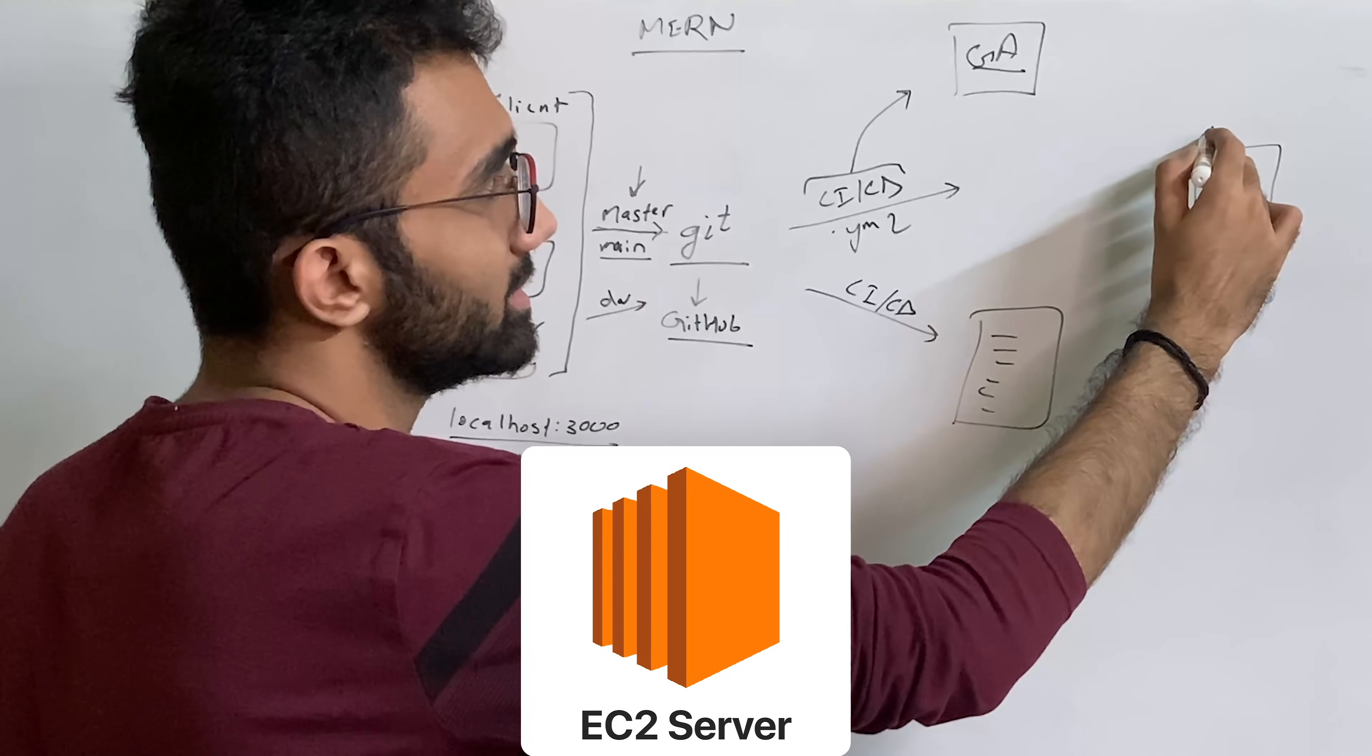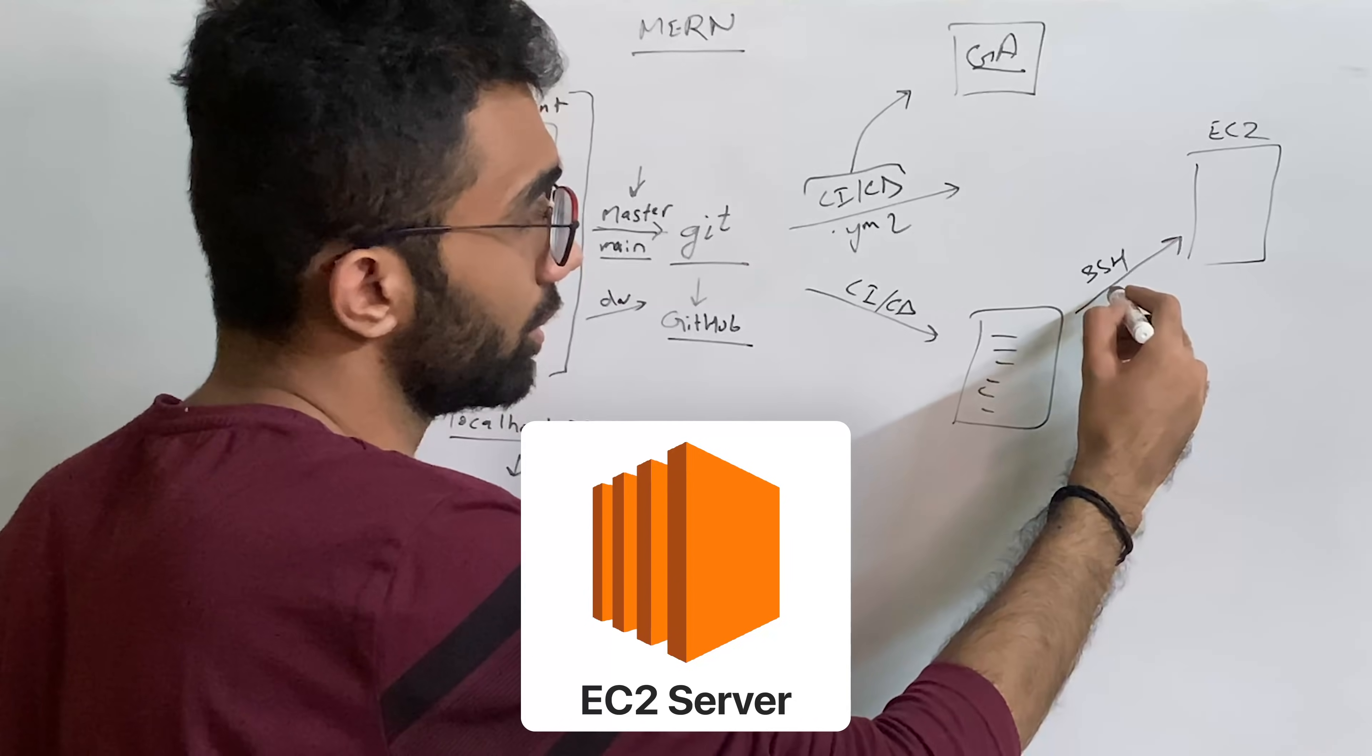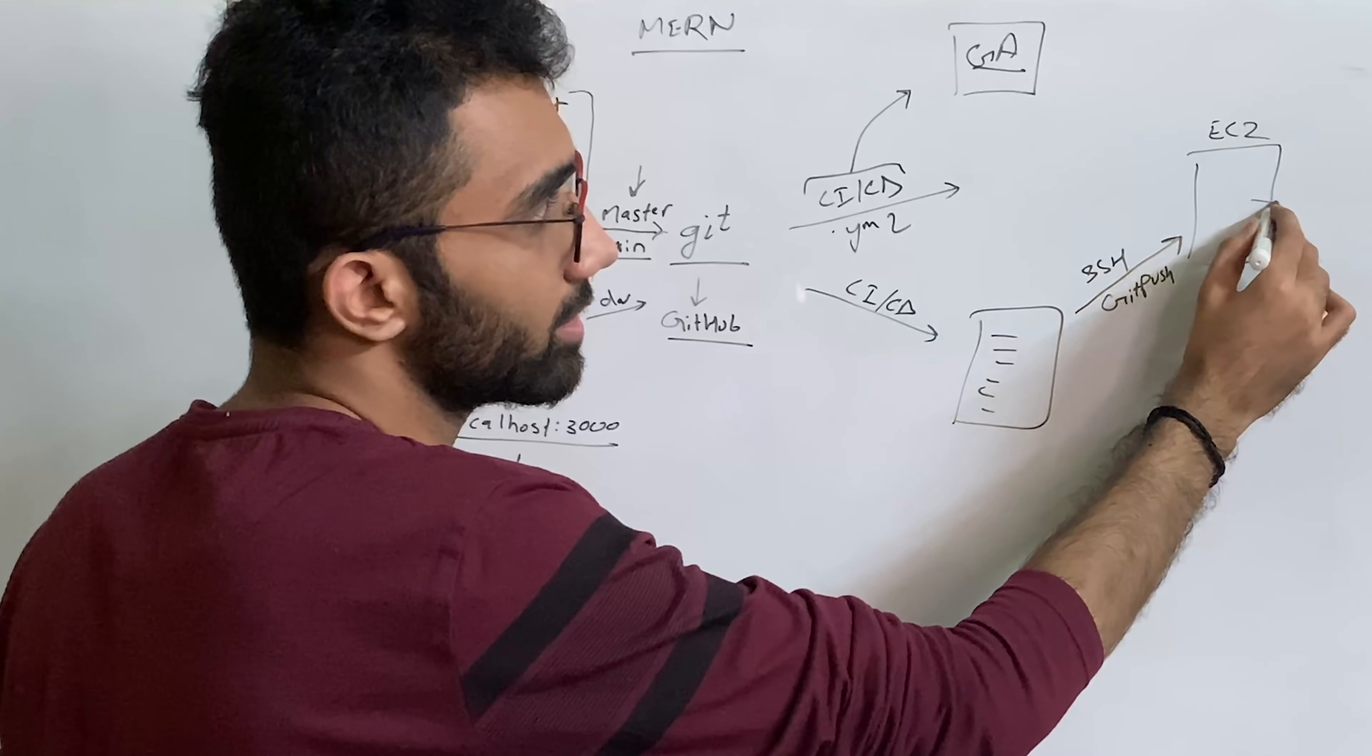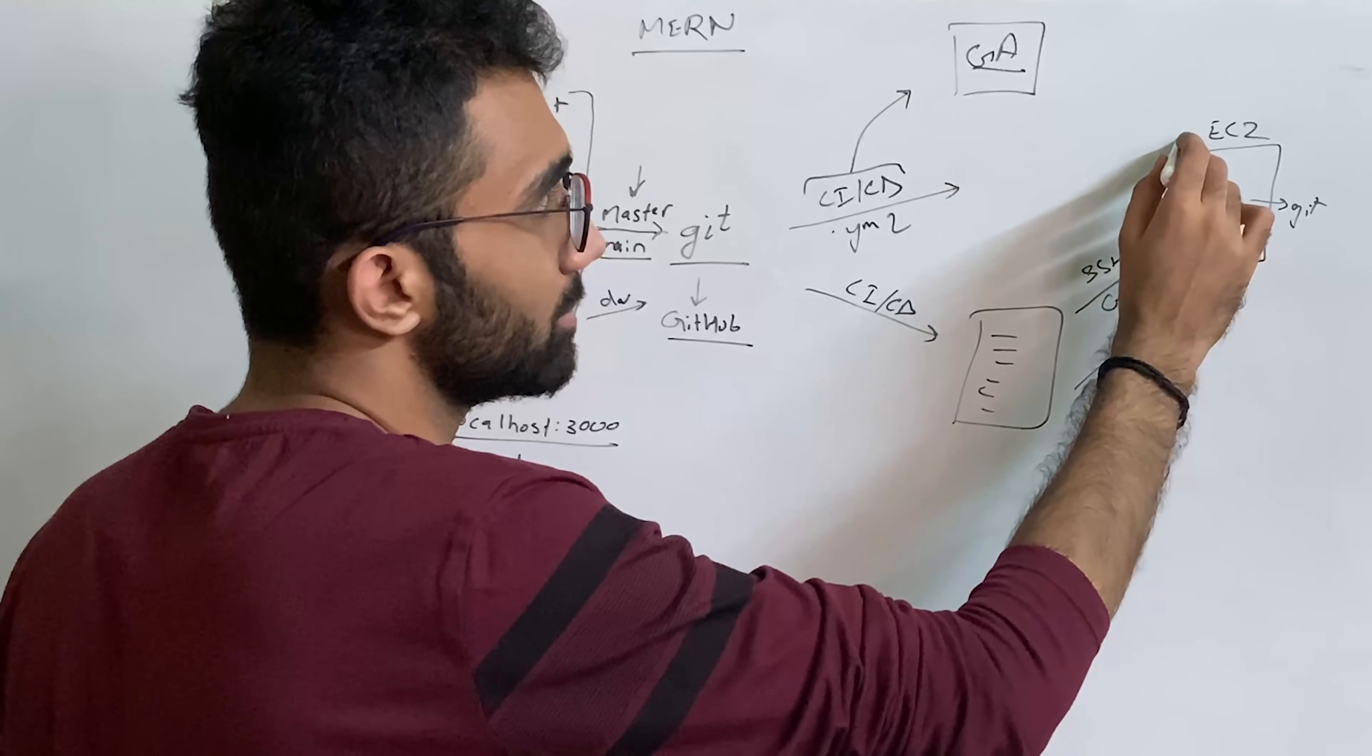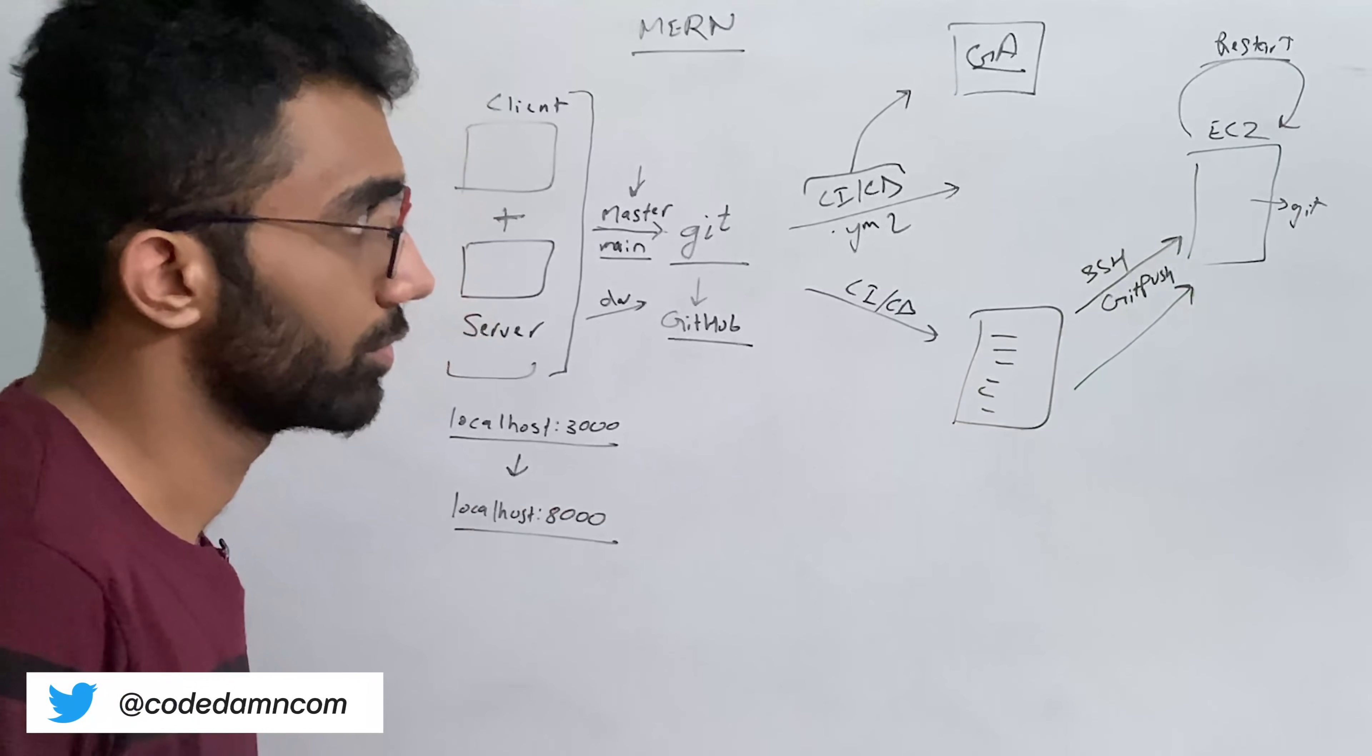For some people it might be just a simple EC2 server, right? You connect this to SSH, this is one way. Or you connect this via Git push, you actually initialize a Git repository here and push it from here. And the second step is you restart the server itself, right? So restart or reload or whatever you want to do.